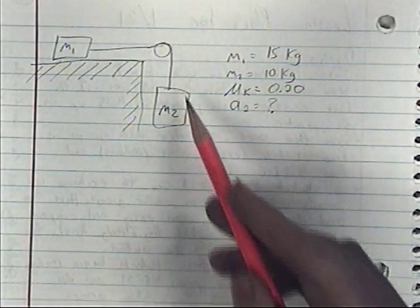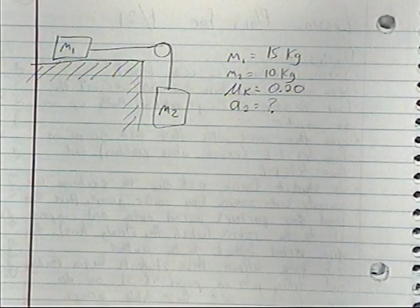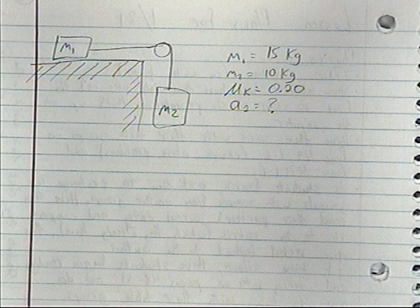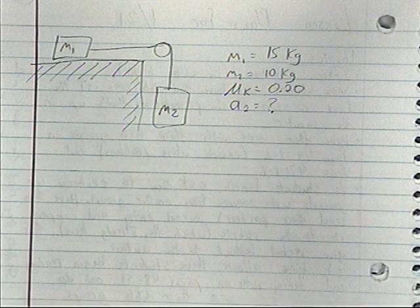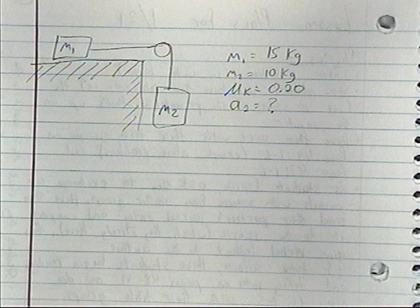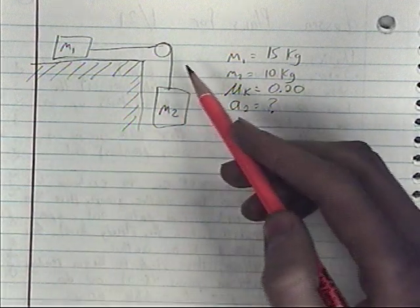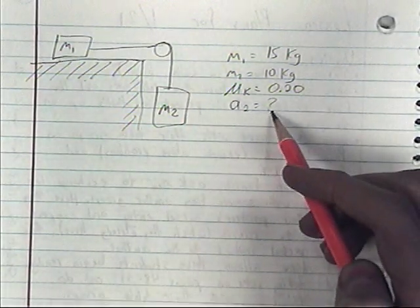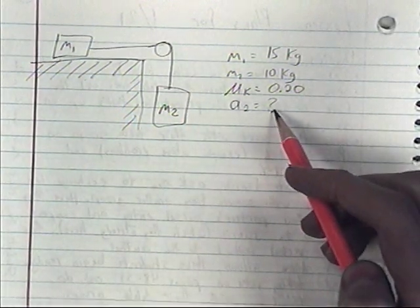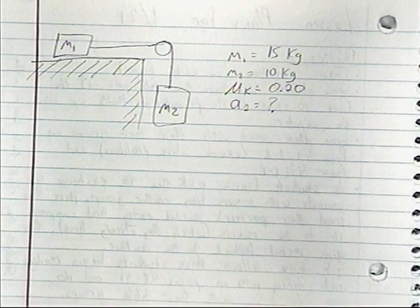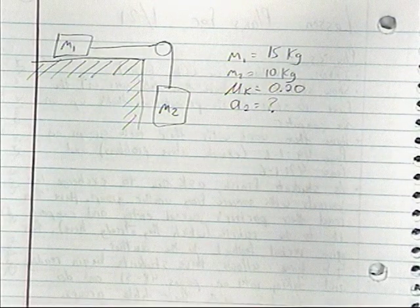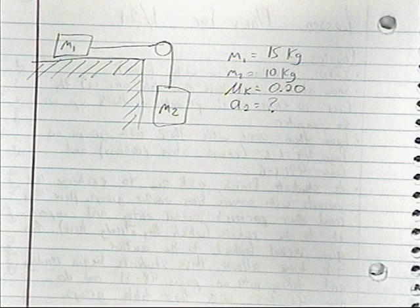If we cut the string and just let mass two fall, it would accelerate at 9.8 meters per second squared. So we can assume the answer will be somewhere between zero and negative 9.8 meters per second squared — that's a good way to check our work at the end.